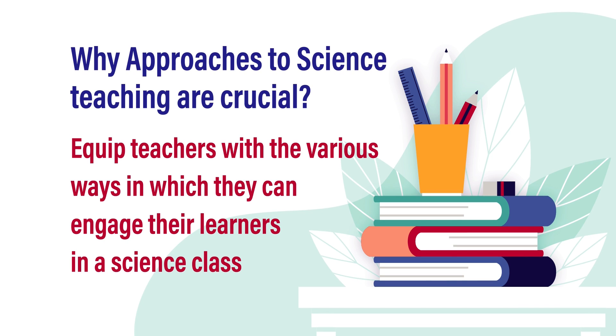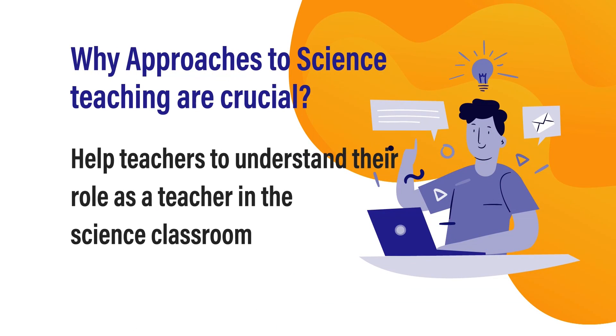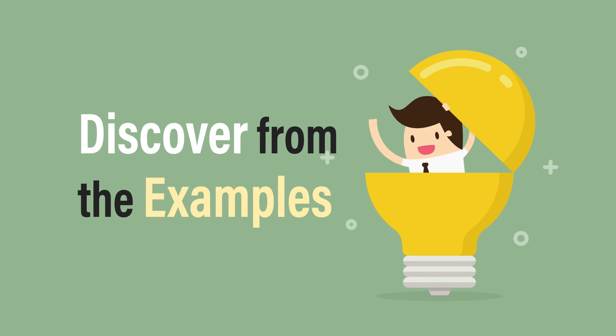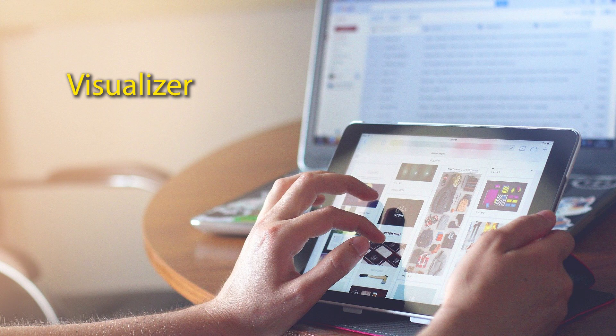Science teaching approaches equip teachers with various ways in which they can engage with their learners in a science class — how they are going to begin the lesson, how they are going to progress in the lesson, and how they are going to end or culminate the lesson. It also helps teachers understand their role in the science classroom. If a teacher starts with introducing and explaining a concept, their role becomes that of an explainer. But if the teacher gives lots of examples and lets the learner discover the concept from them, the role of the teacher becomes that of a facilitator. So as per the kind of approach, the teacher visualizes his or her role in the science classroom.